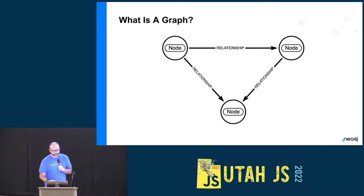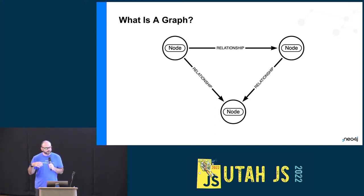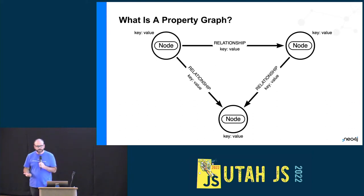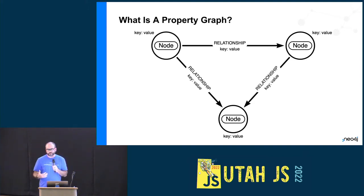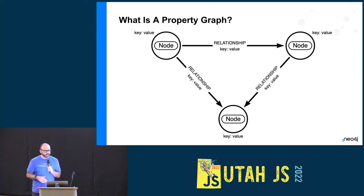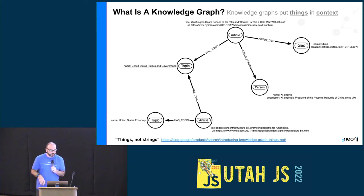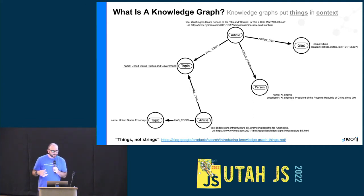At a fundamental level, a graph is a data structure. Nodes are the entities, and relationships connect them. The property graph data model means I have labels that describe the type of node — you can think of that like a table from a relational database, a way to group entities. Relationships connect these nodes, and I can store key-value pair properties as attributes on both nodes and relationships.